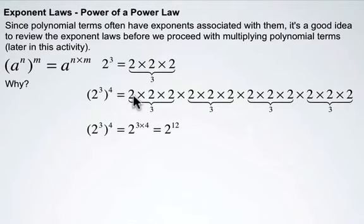That means we have a total of 12 twos in a repeated multiplication, which is 2 to the twelfth, or 3 times 4.